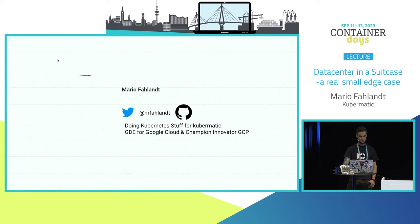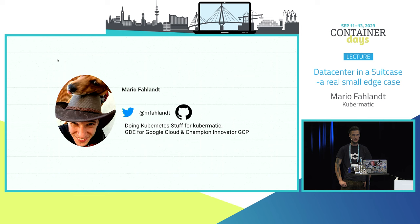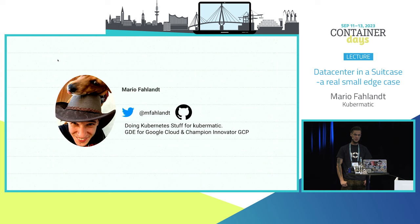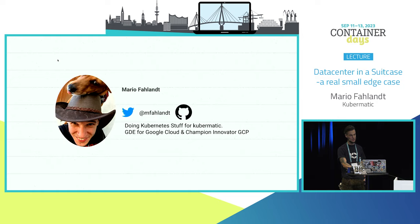Who am I? I'm Mario - that's the other dog, as we have quite some animals. You can find me on Twitter, or how it's now called, X, with mFarland. I'm working as a Kubernetes consultant, and I'm also one of the Google Developer Experts for Cloud, and organizer of the Google Developer Group in Munich. So if you're ever in Munich, come visit us for our meetups.